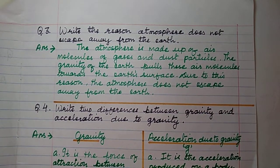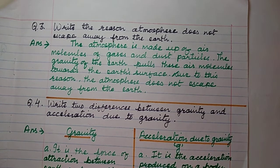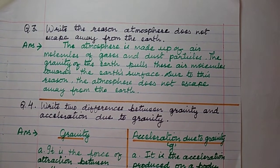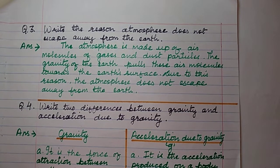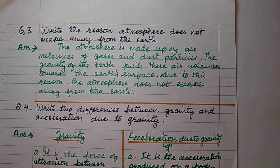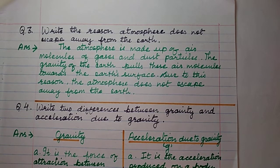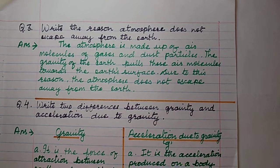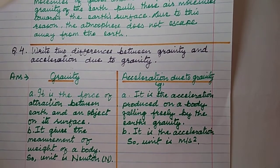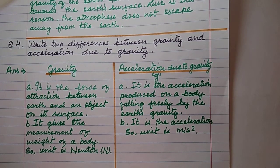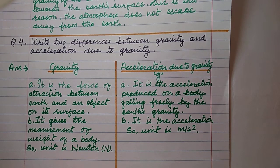Question three: write the reason the atmosphere does not escape away from the earth. The atmosphere is made up of air molecules and gas particles. The gravity of the earth pulls these air molecules and particles towards the earth's surface. Due to this reason, the atmosphere does not escape away from the earth and remains attached to the surface.